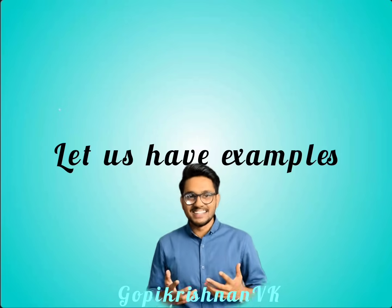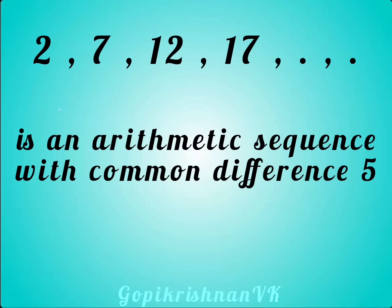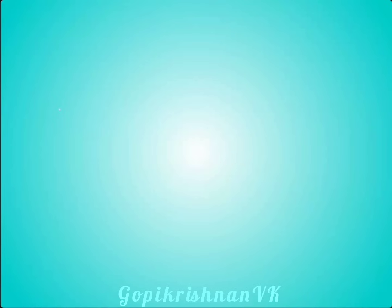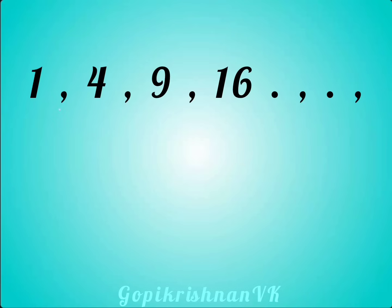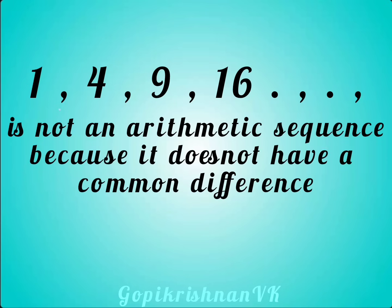Let us have examples. 2, 7, 12, 17, and so on is an arithmetic sequence with common difference 5. Whereas 1, 4, 9, 16, and so on is not an arithmetic sequence because it does not have a common difference.